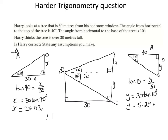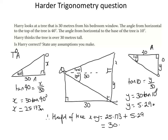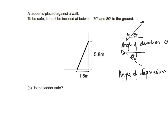Therefore the height of the tree is x plus y: 25.173 plus 5.29, which gives an overall height of 30.5 metres to three significant figures. So Harry is correct. The angle of elevation is the angle made with the horizontal when looking up, and the angle of depression is the angle made with the horizontal when looking down — two terms you need to be familiar with.